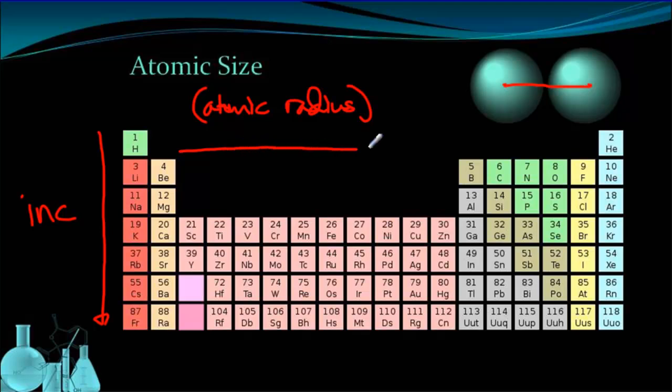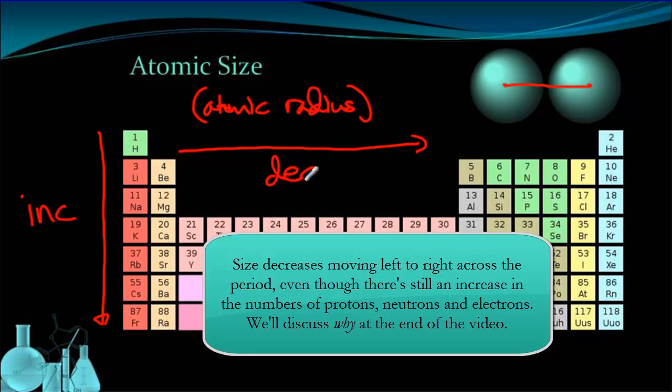But as we move across a period, left to right, something interesting happens. The atomic size decreases. These are the trends for atomic size on the periodic table.